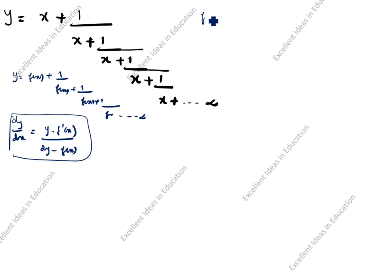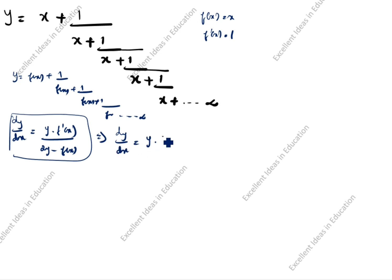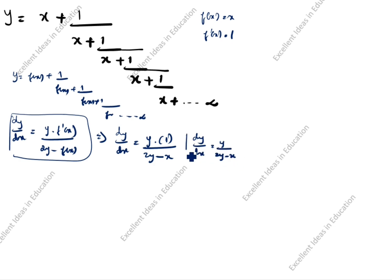Substituting f(x) = x and f'(x) = 1 into the formula: dy/dx = y·1 divided by (2y − x), so the final answer is dy/dx = y divided by (2y − x).